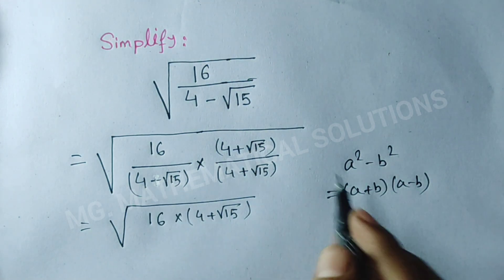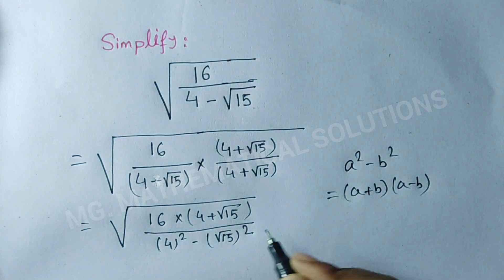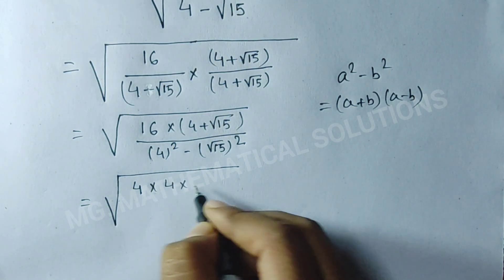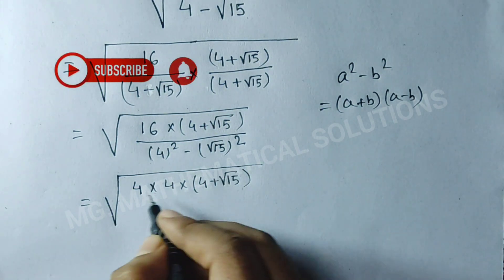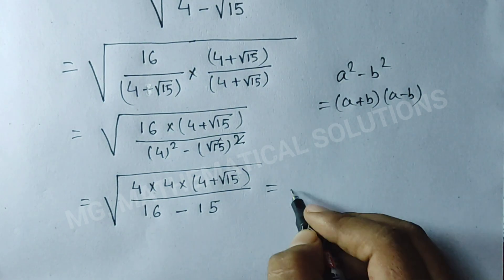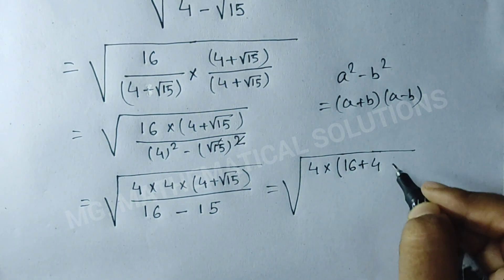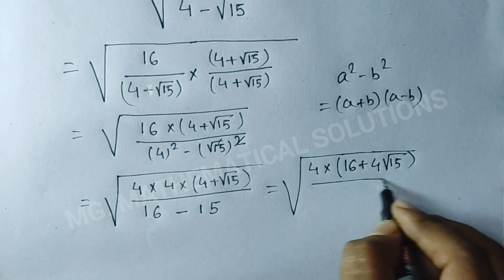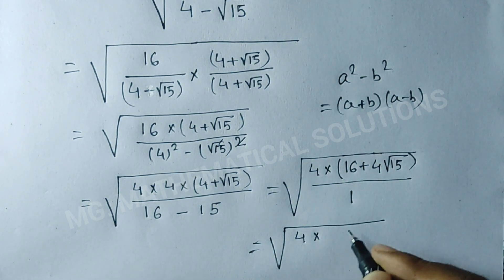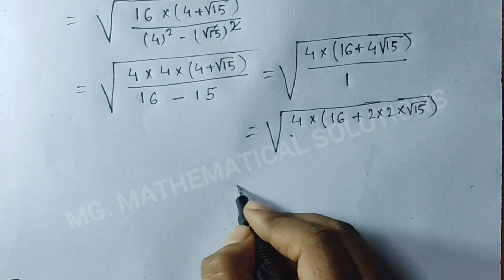Here a means 4 and b means root of 15. So the denominator becomes 4 squared minus (root 15) squared, which equals 16 minus 15, giving us 1. The expression simplifies to root of [16 times (4 plus root 15)].